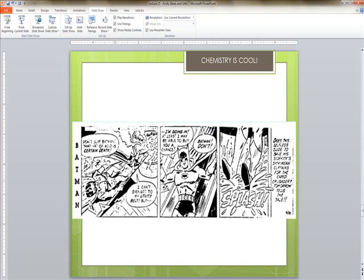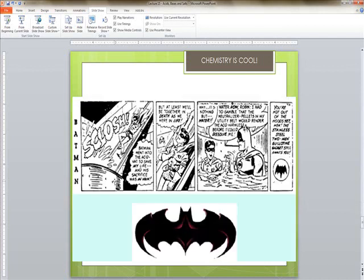So he goes down the slide. Robin's screaming at him, don't slip. That vat of acid is certain death. I can't even get to my utility belt, but I'm going in. At least I may be able to give you a chance. He's sacrificing himself. So he goes into the acid. And Robin goes in, and he says, we'll be together in death as we were in life. Again, nothing was going on between them. And he says, but there's nothing but water. And he says, water now. I had to gamble. And he put a base in the acid to create water and salt.